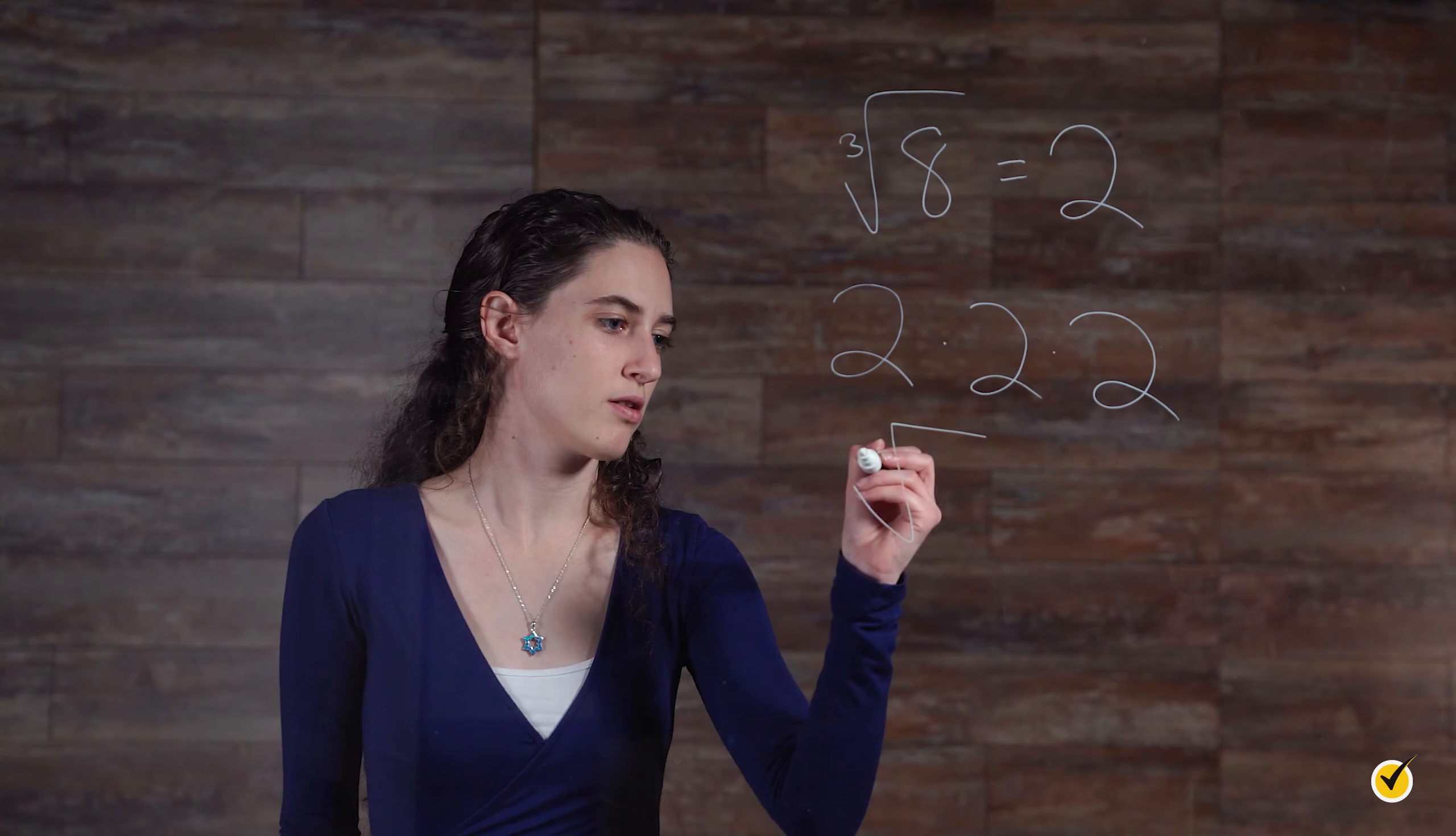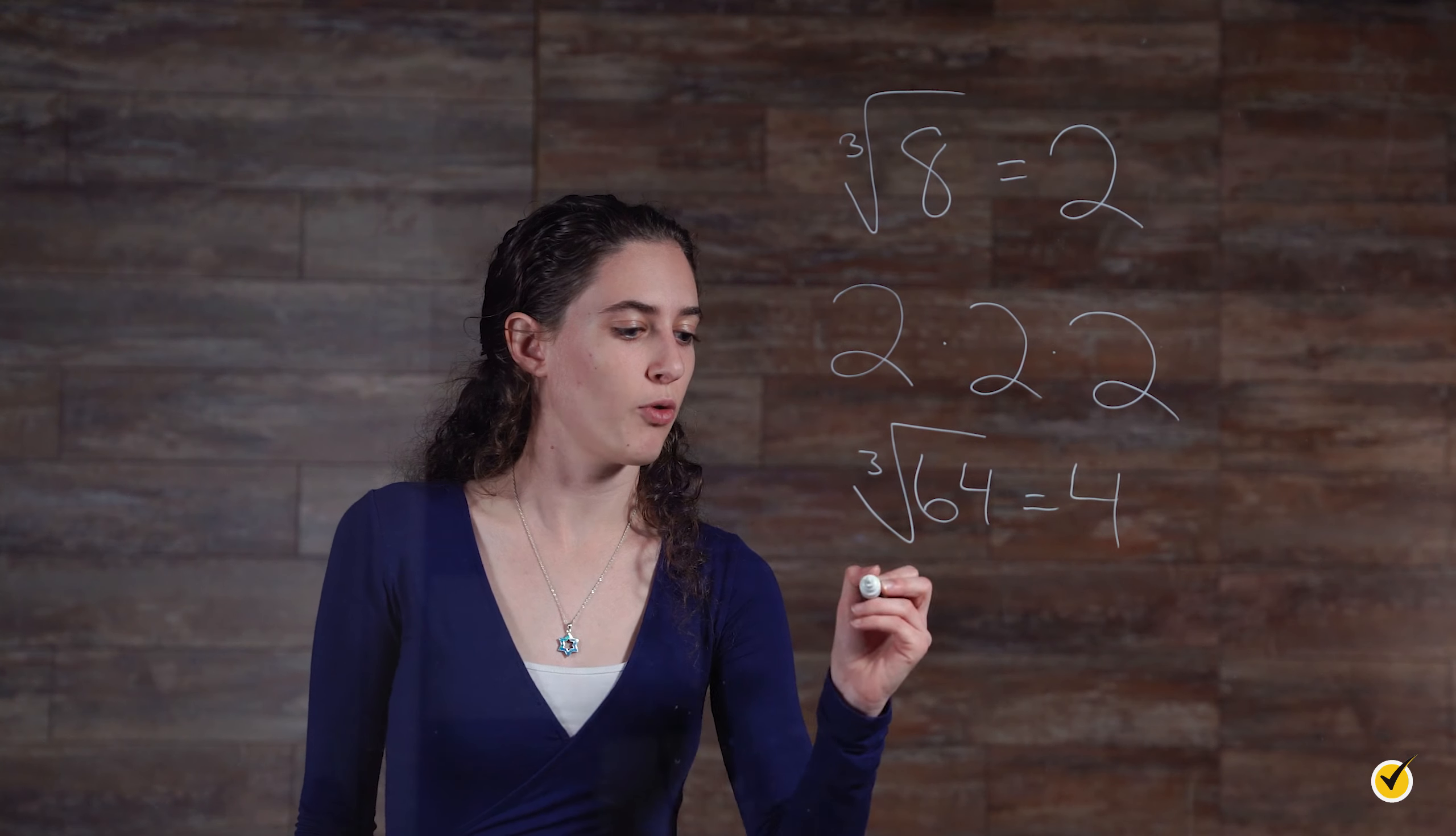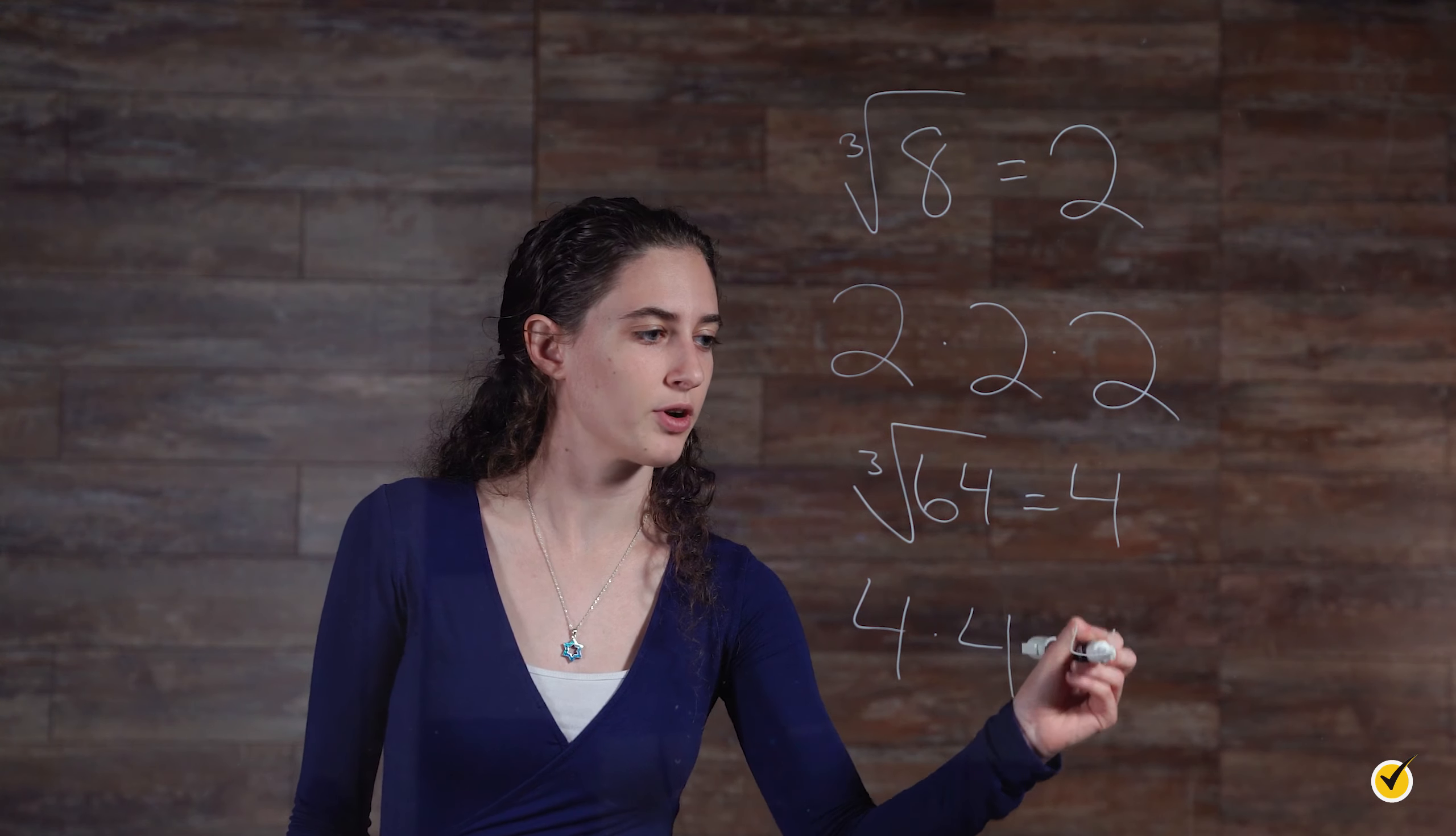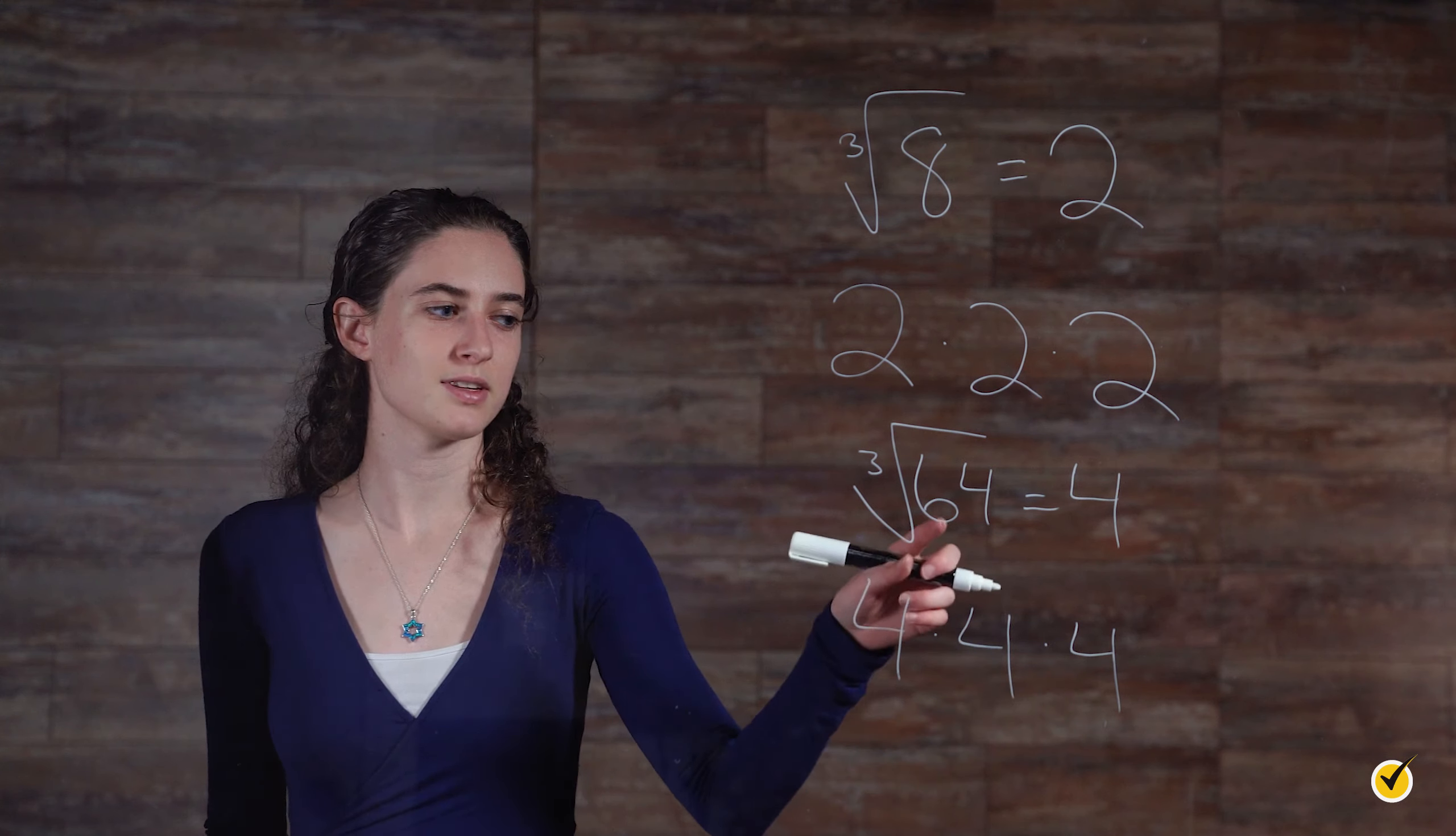Let's try another example. The cube root of 64. This would be 4, because 4 times 4 is equal to 16, times 4 gives you 64. 4 times itself 3 times, gives you 64.